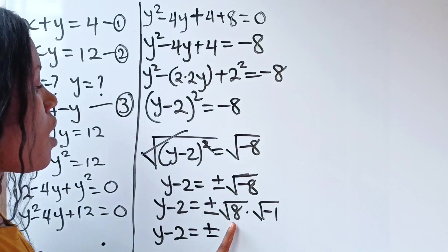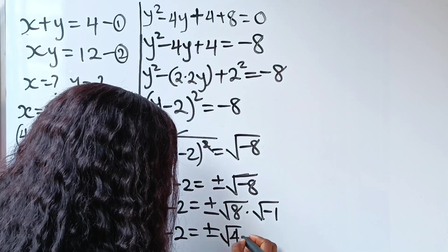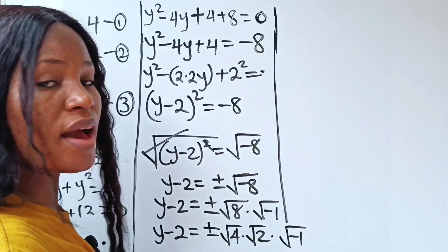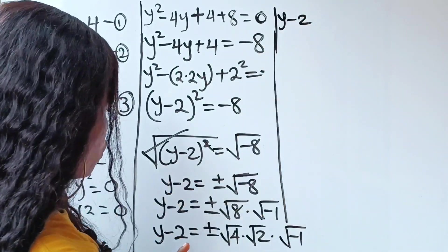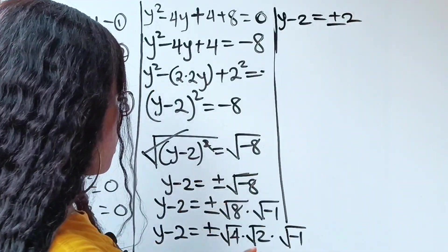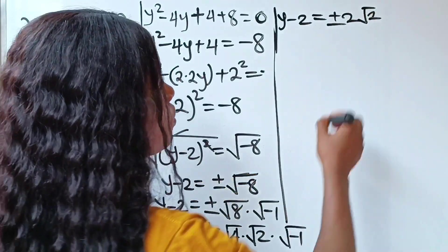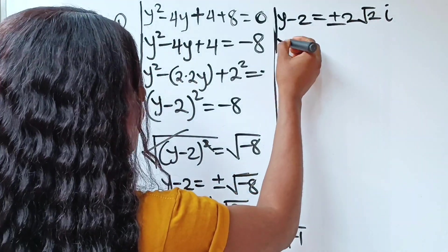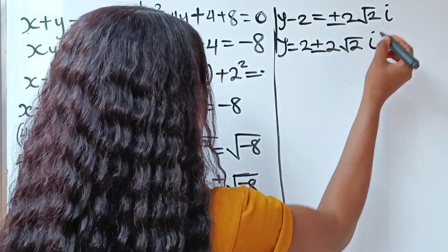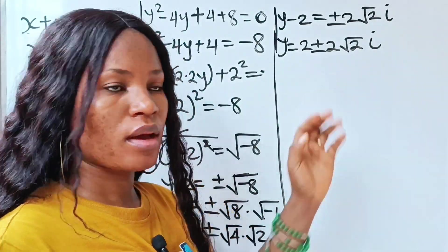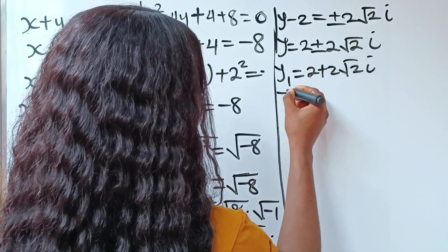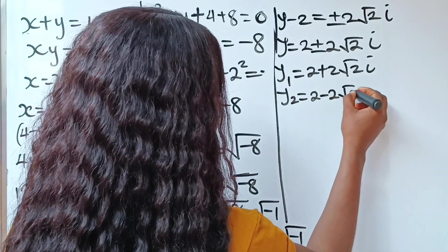Now square root of 8 is the same as square root of 4 multiplied by square root of 2, multiplied by root minus 1. From here, y minus 2 equals plus or minus — square root of 4 is 2 — times root 2, and square root of minus 1 is i. So y equals 2 plus or minus 2 root 2i. We now have two values: y₁ equals 2 plus 2√2i, and y₂ equals 2 minus 2√2i.